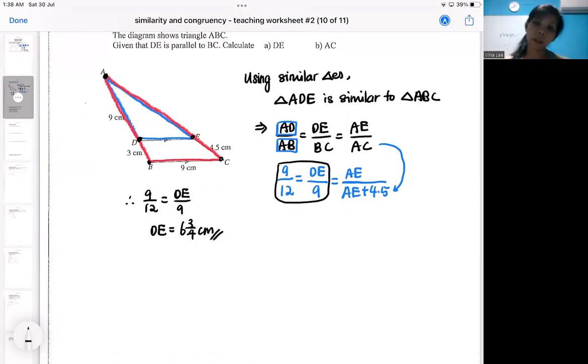And how you verify AC. Okay, AC is AE plus 4.5. So I will be using this. I will use the nine over 12 against this.